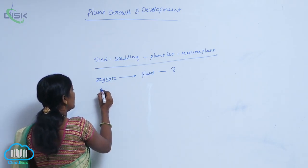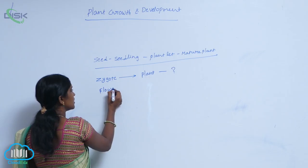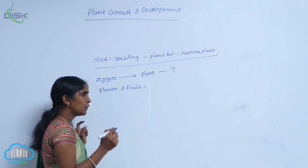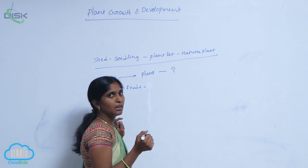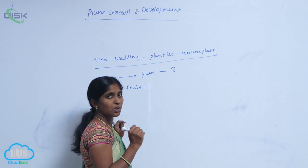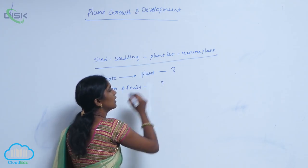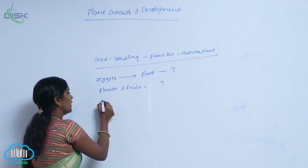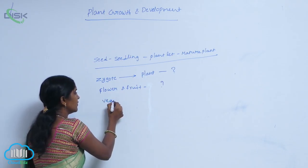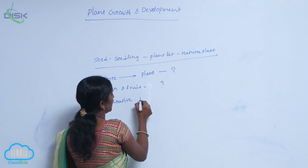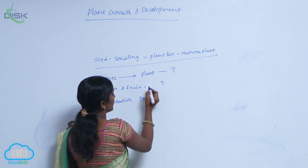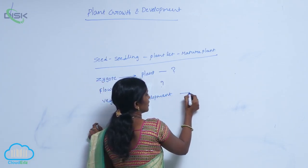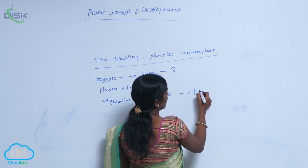Flowers and fruits are produced. How they are produced in a periodic manner — periodically. How they are producing: zygote to seed, and vegetation development promotes reproductive development.